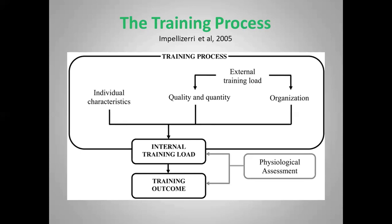The internal training load is made up of the external training load — what's prescribed in terms of the number of laps, sprints, or distance covered — and the individual's characteristics in terms of fitness levels, genetics, and so forth. Traditionally we used to look at this relationship between training load and training outcome using physiological assessments, testing people every six weeks or so and then adapting our training program.